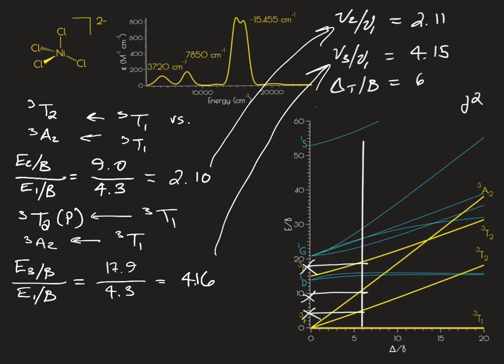So we're going to use these values going forward to calculate delta T and B for our nickel tetrachloride anions. Going through, we're going to calculate now our values for B and delta T. So for B, we have a lot of different values that we can use.